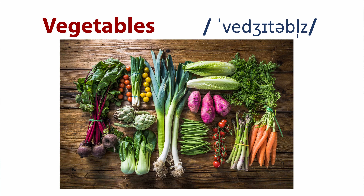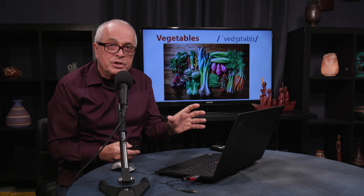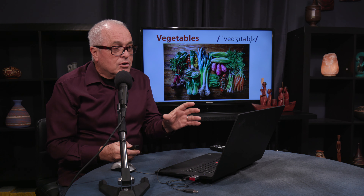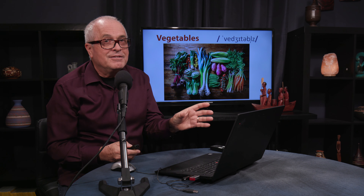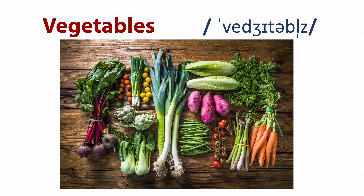Another category of foods is vegetables. There are really two types of vegetables, and we'll talk about this more in a future lesson. There are what's called root vegetables and leafy vegetables. We see in the photograph here some sampling of both types — some root-based vegetables and also some leafy vegetables.